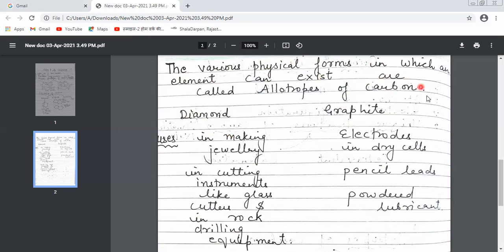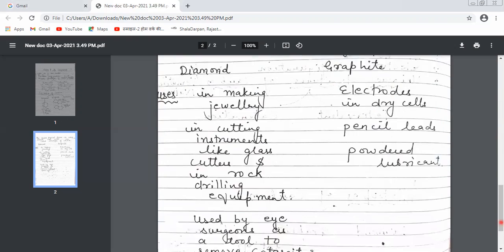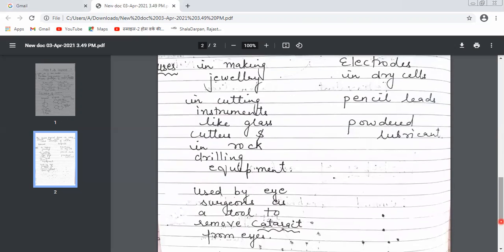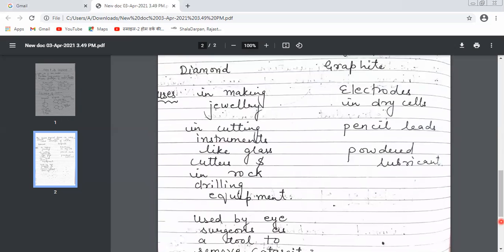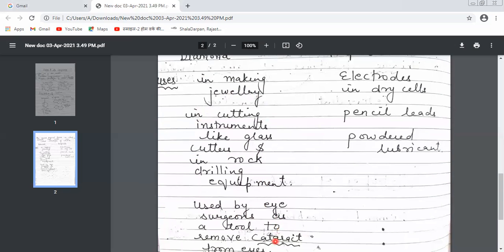Now let's discuss the uses of diamond and graphite. Diamond is used in cutting instruments like glass cutters, in rock drilling equipment, and is even used by eye surgeons as a tool to remove cataracts from eyes.